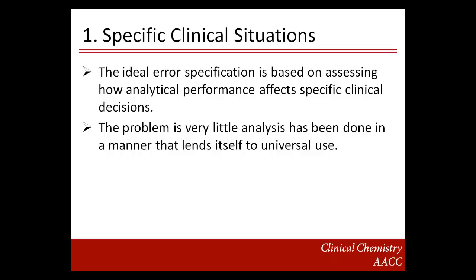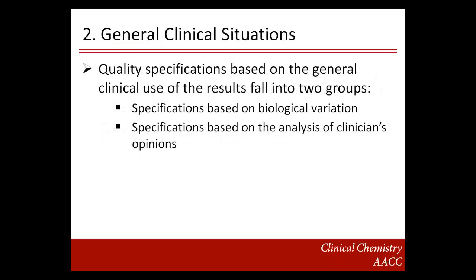Quality specifications in specific clinical situations are designed based on assessment of analytical performance in specific clinical situations, but very little analysis has been done to specify error criteria for universal use. Quality specifications based on general clinical use fall into two categories: specifications based on biological variation and specifications based on analysis of clinicians' opinions. Specifications based on biological variation are firmly based on medical requirements. Dr. Callum Fraser explains why it's important to set quality specifications based on biological variation, describing the effects of within-individual and between-individual variation.